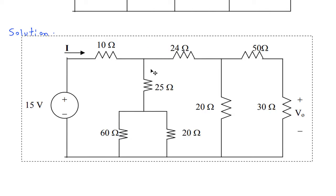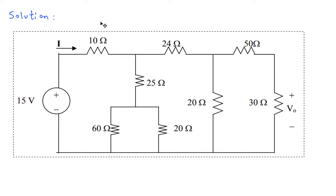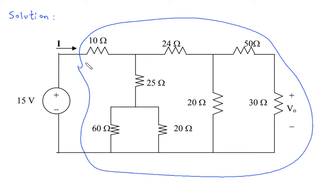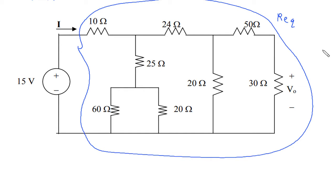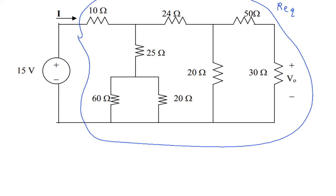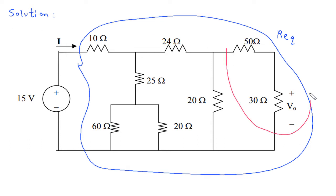Solution. First we will redraw the circuit, then we will find the Req. To find Req, this 50 Ohm and 30 Ohm are in series, so this will be 80 Ohm.